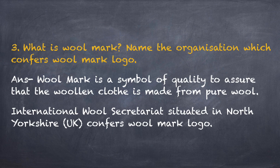Third question: What is Woolmark? Name the organization which conferred the Woolmark logo. Answer: Woolmark is a symbol of quality to assure that the woolen cloth is made from pure wool. International Wool Secretariat situated in North Yorkshire, United Kingdom confers the Woolmark logo.